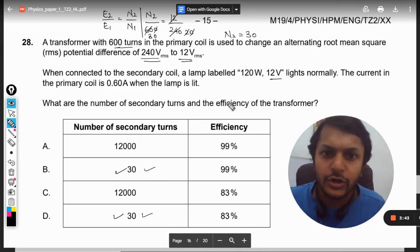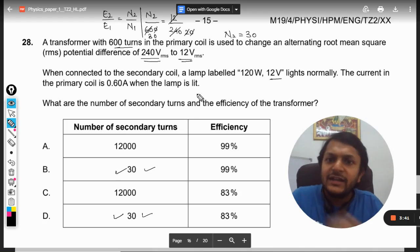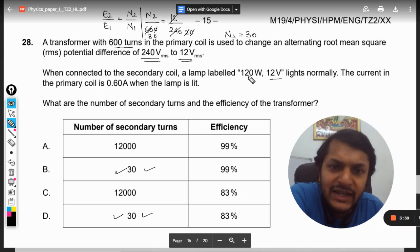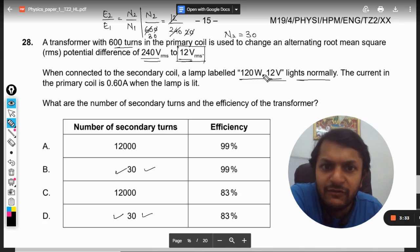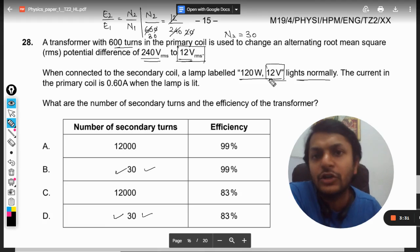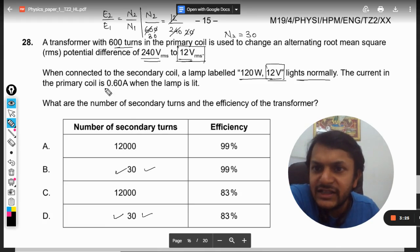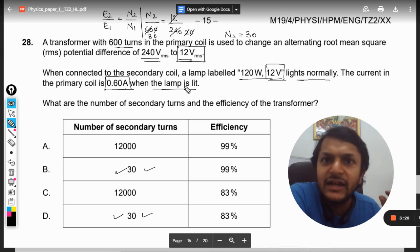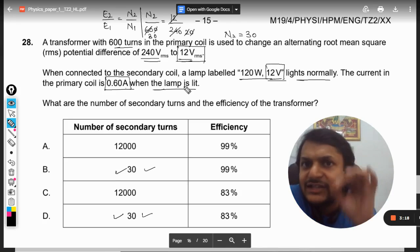Now when connected to the secondary coil, a lamp labeled 120 watt and 12 volts lights normally. Because our output voltage is 12 volts and the lamp is also requiring 12 volts, so definitely the lamp will be working normally. There is no problem. The current in the primary coil is 0.06 when the lamp is lit.